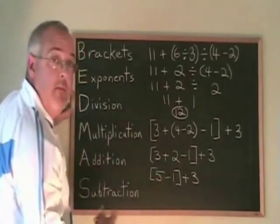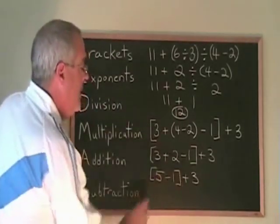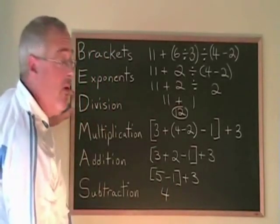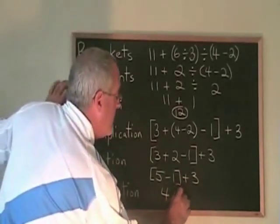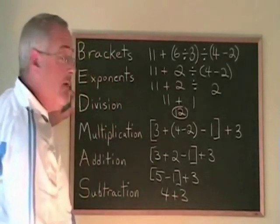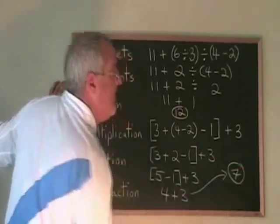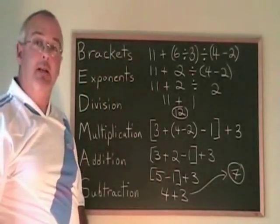Now, the 5 minus 1 in the bracket has to be done before the addition. 5 minus 1 is 4. I write the answer. I don't need the bracket anymore, and I copy down the plus 3. 4 plus 3, of course, is 7. That's my answer. This is how you deal with nested brackets.